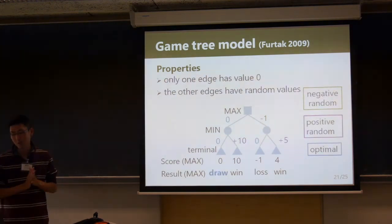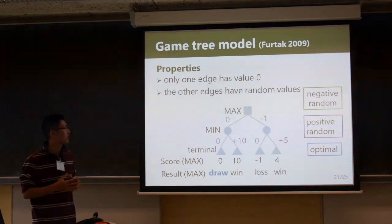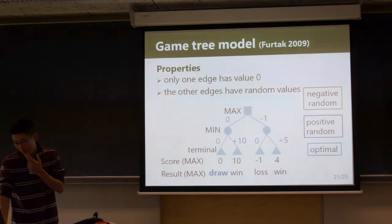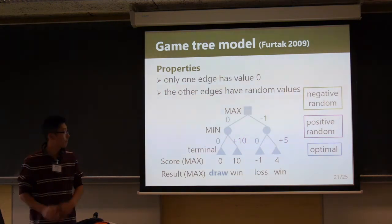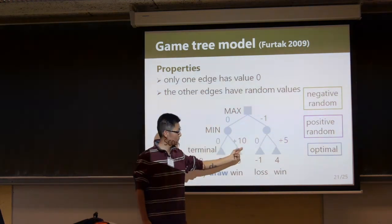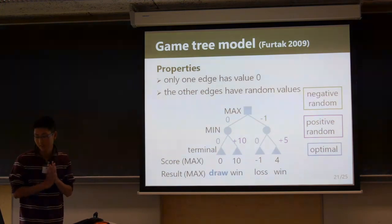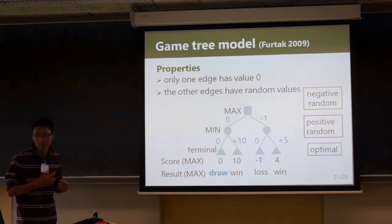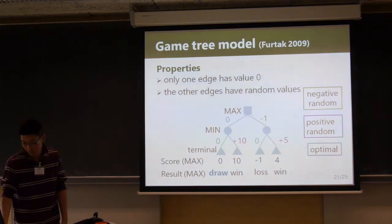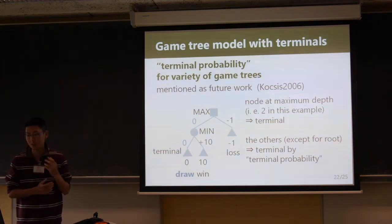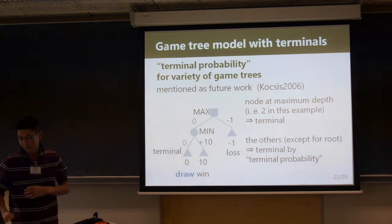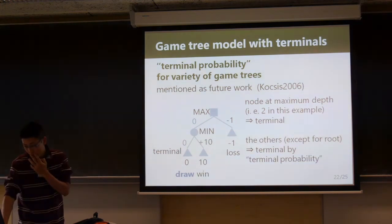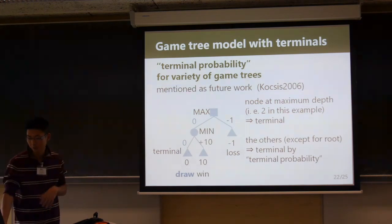Each node has only one edge with value zero; the other edges have random positive or negative values. The zero-value edge is optimal and the game is played with both players acting randomly or both acting optimally. We introduce a terminal probability to generate a variety of games. We randomly turn some nodes to terminals with some probability, except for the root.